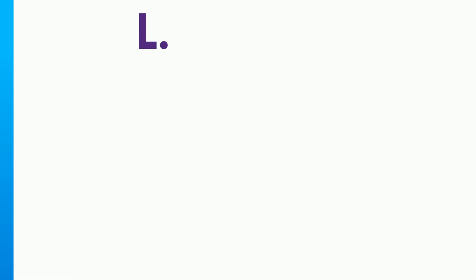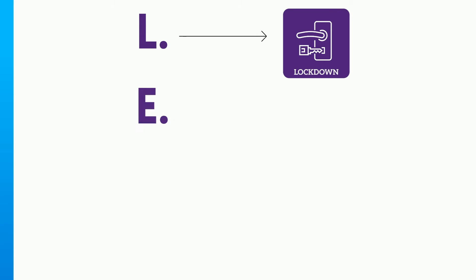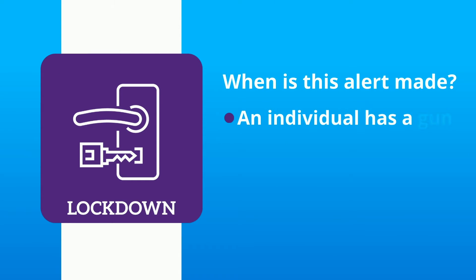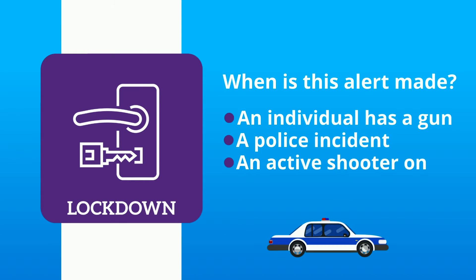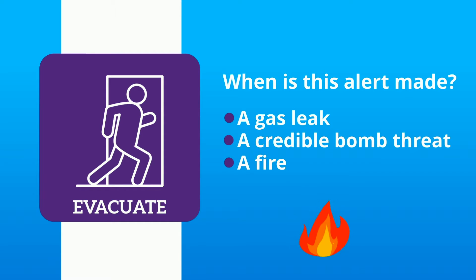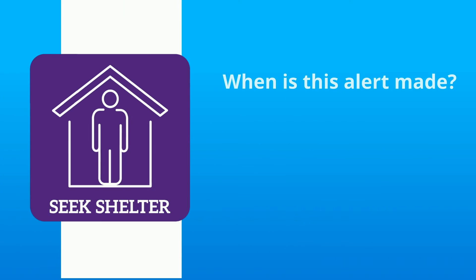L. Lockdown. E. Evacuate. SS. Seek shelter. A lockdown TCU alert announcement would be made if there was an individual with a gun, a police incident, or an active shooter on campus. An evacuate TCU alert announcement would be made if there was a gas leak, a credible bomb threat, or a fire. A seek shelter TCU alert announcement would be made if there was a violent storm in the area.